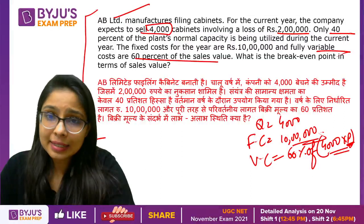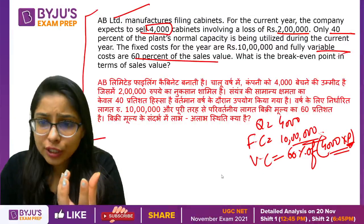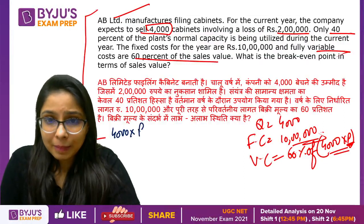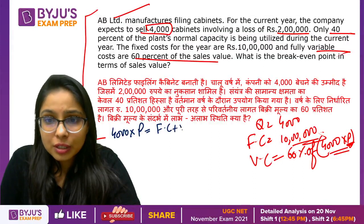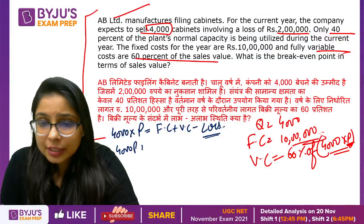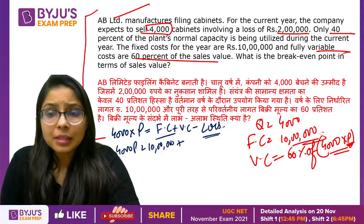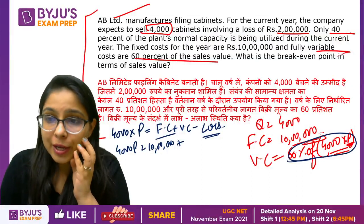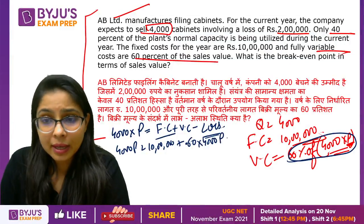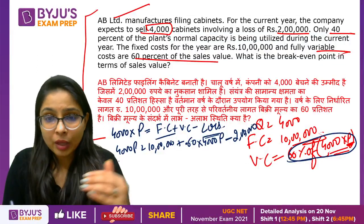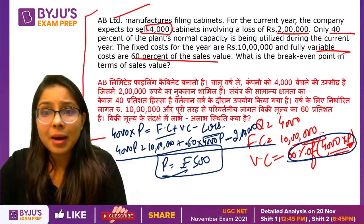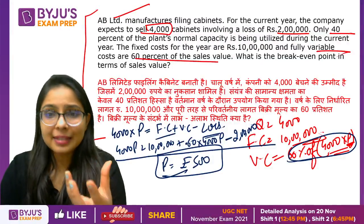How do we calculate that P? We use P to calculate the price using this equation. For 4,000 units, we know that: fixed cost plus variable cost minus loss equals sales. So, 4,000P equals fixed cost of 10 lakh, plus variable cost of 0.60 × 4,000P, minus the loss of 2 lakh. When we solve this equation, P comes out to 500 rupees. The price is 500 rupees.